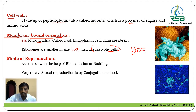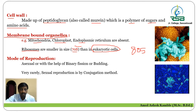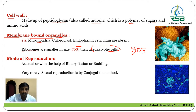In Kingdom Monera the size of ribosome is 70S, while in eukaryotic cells it is 80S. The 'S' stands for the Svedberg unit, named after the scientist who discovered the measurement of ribosomes. So 'S' indicates the Svedberg unit.